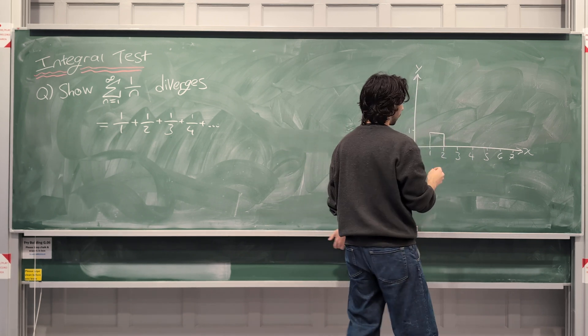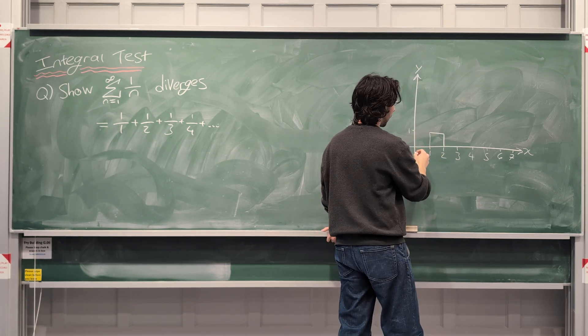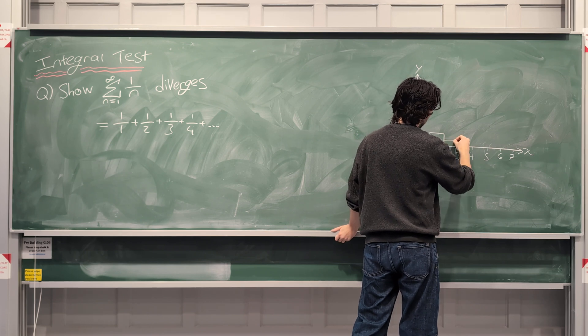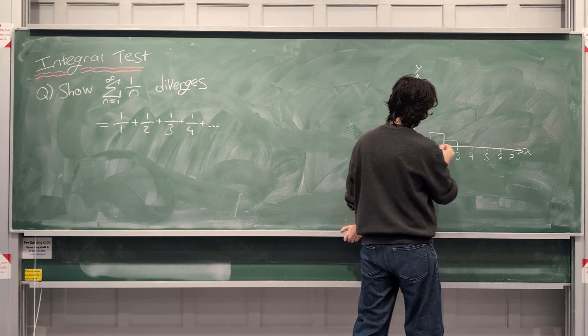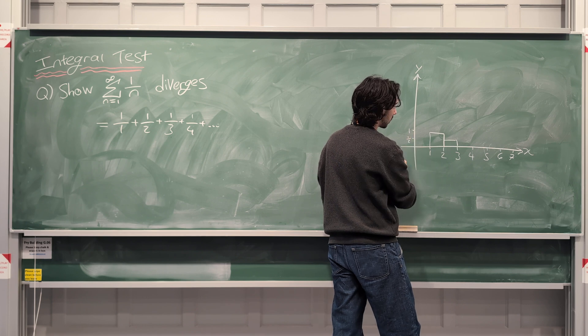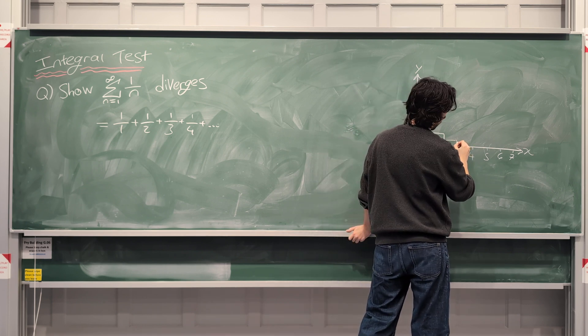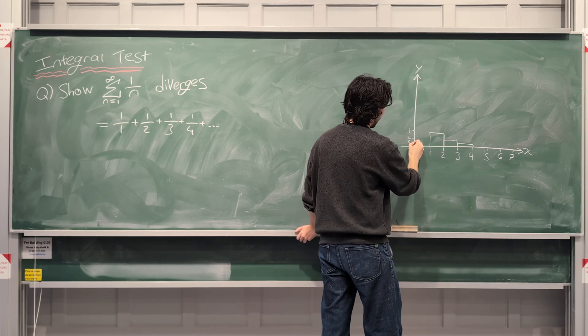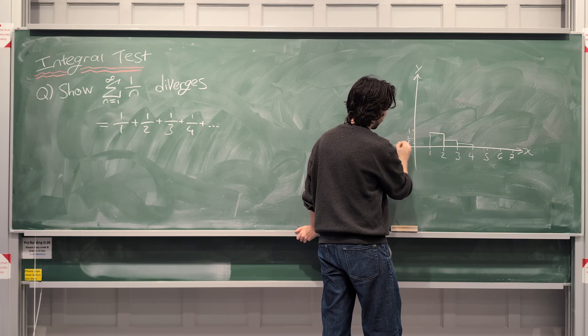The next rectangle will have an area of 1/2, so it'll look like this. Then the next one, this is 1/2, the next one will have 1/3, so like this. And it's very difficult to draw, but that would be 1/3, and so on and so forth.